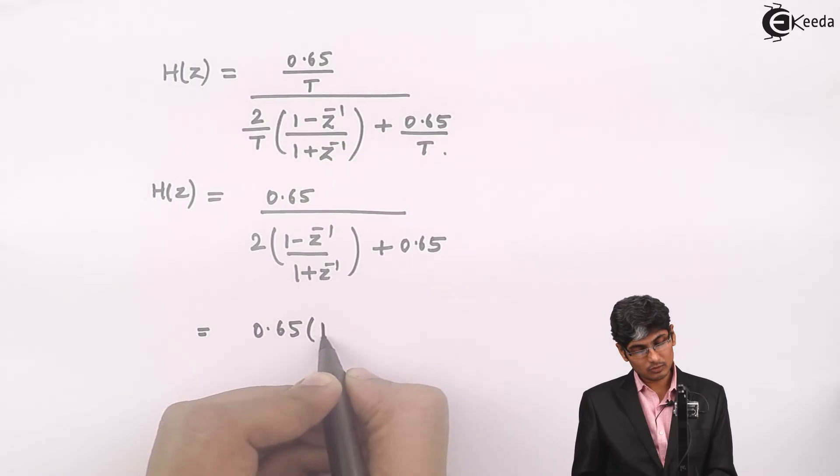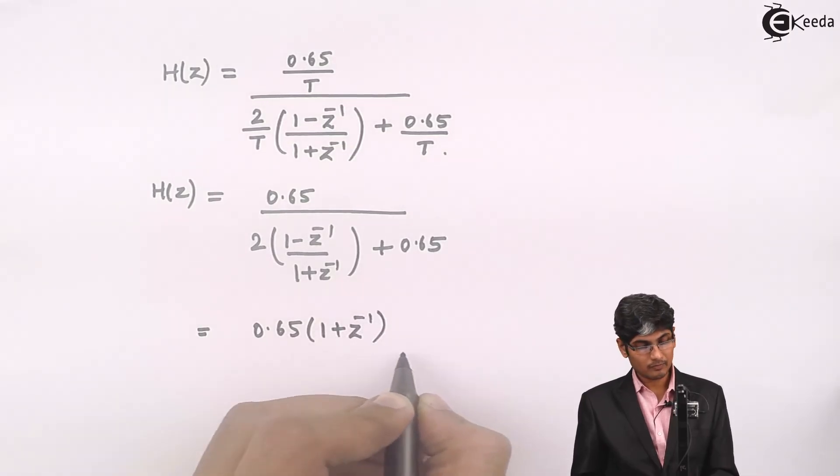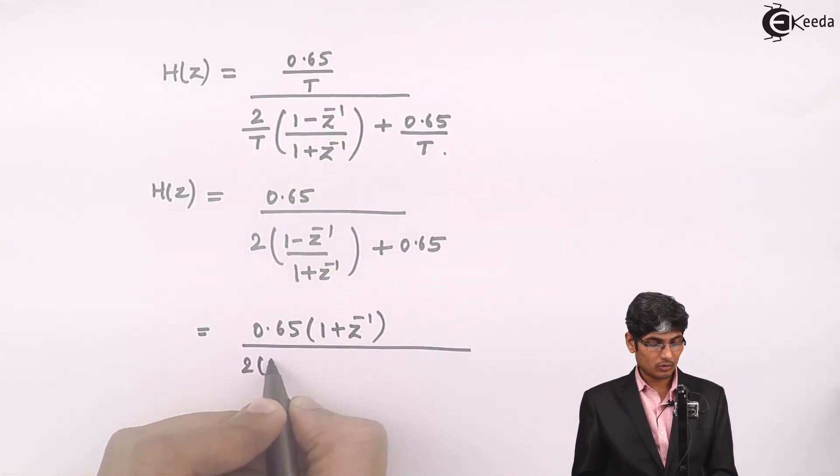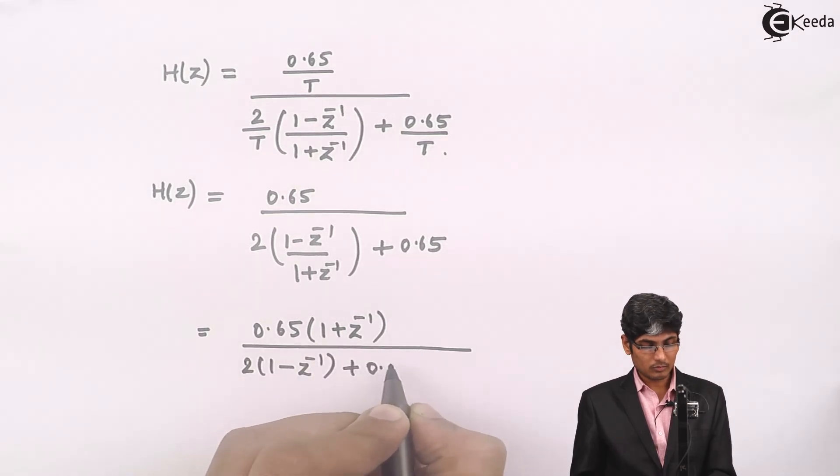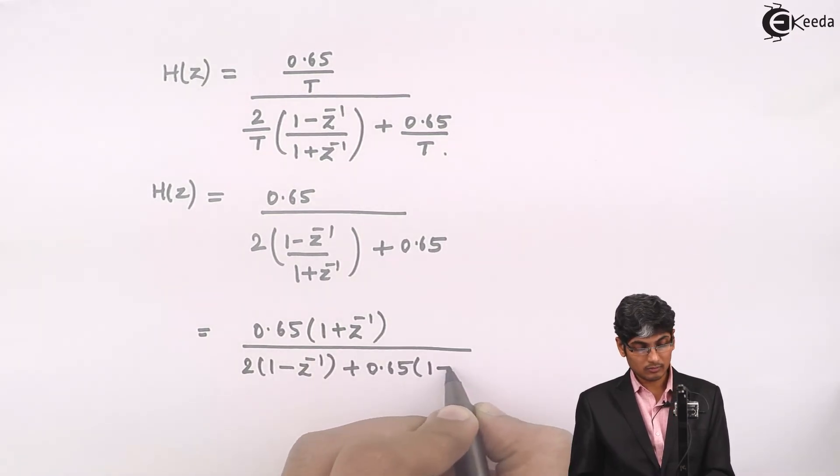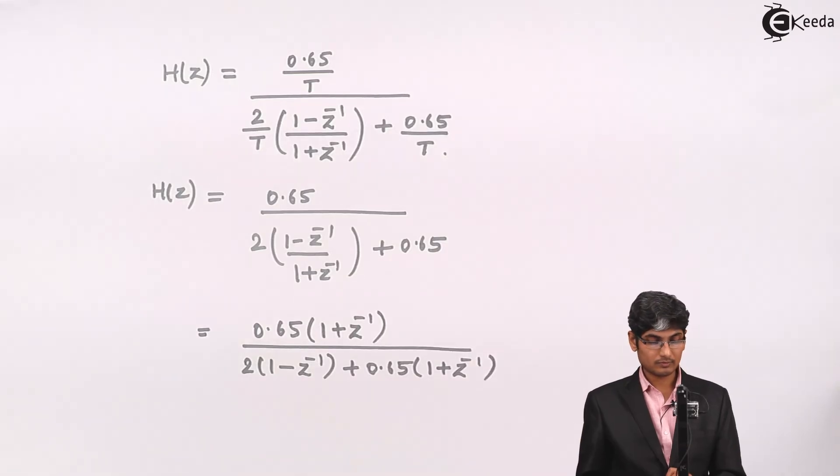So this will be 0.65(1 + z⁻¹) divided by [2(1 - z⁻¹) + 0.65(1 + z⁻¹)].